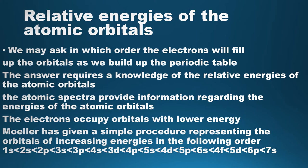In the previous section we learned about stationary states, quantum numbers, and atomic orbitals. We may ask in which order the electrons will fill up the orbitals as we build the periodic table. The answer requires a knowledge of the relative energies of the atomic orbitals. Atomic spectra provide information regarding these energies. The order of energies may be written as: 1s < 2s < 2p < 3s < 3p < 4s, and so on. Electrons occupy orbitals with lower energy first. Mylar has given a simple procedure for representing orbitals of increasing energies.